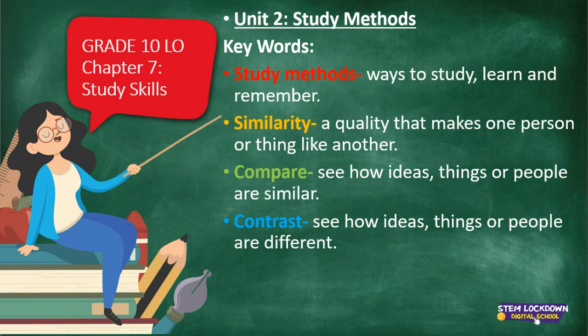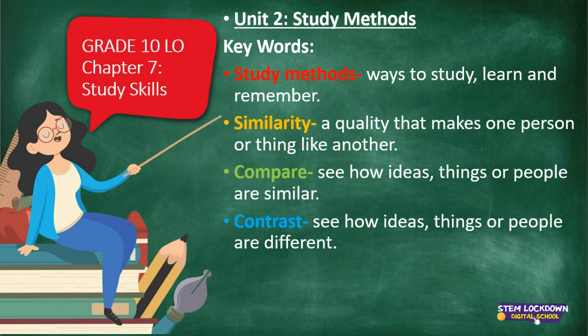Let's look at the keywords. Study methods are the ways in which you study, learn and remember information. Similarities is a quality that makes one person or thing like another. Compare means to see how ideas, things or people are the same or similar. A contrast is to see how ideas, things or people are different. Please be cognizant of these keywords because we're going to be looking at them later on.